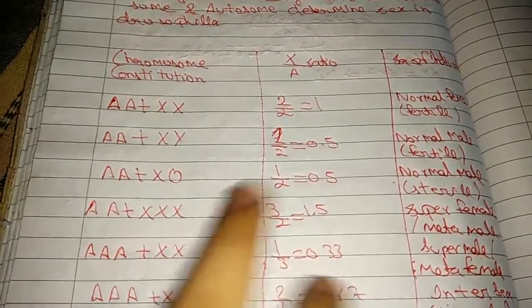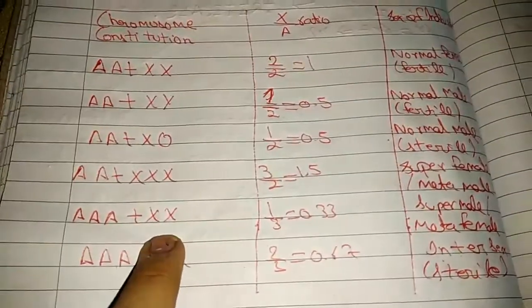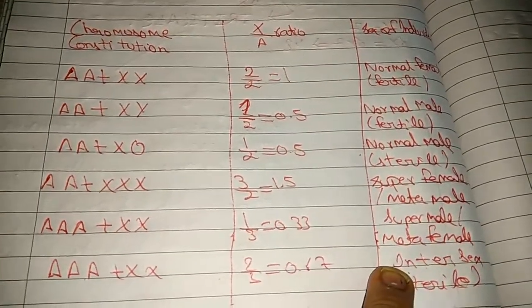AAA + XXX: 3 by 2 equals 1.5, super female or metafemale. AAA + X: 1 by 3 equals 0.3, super male or metamale.